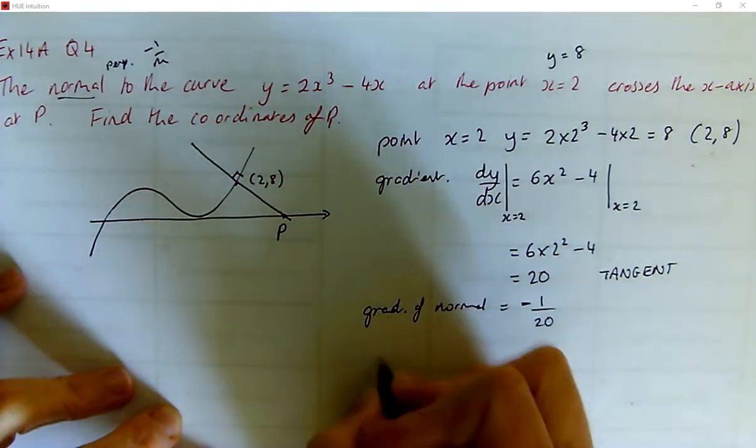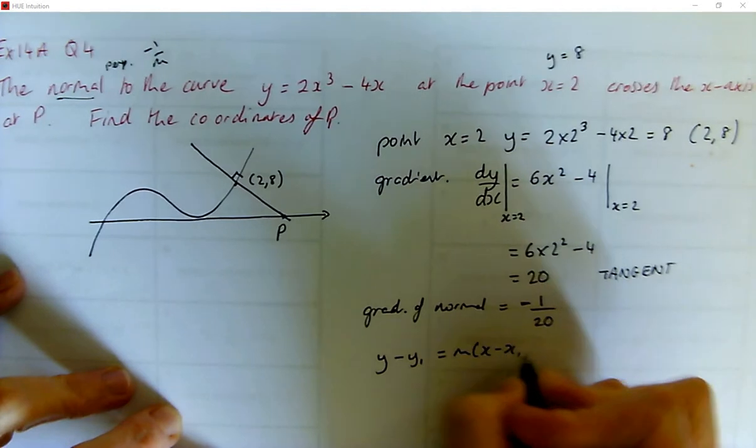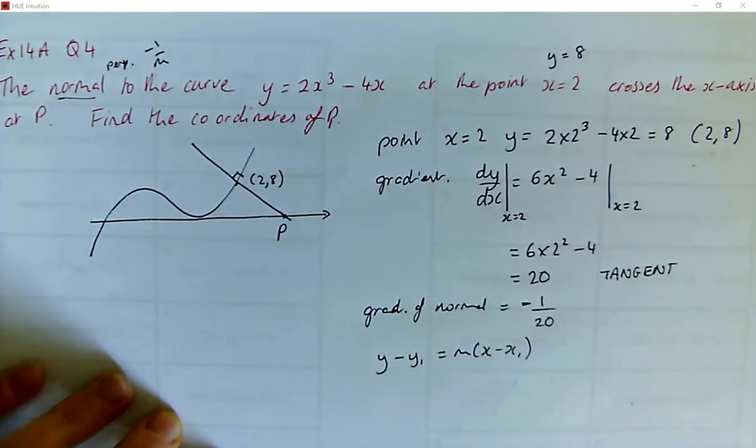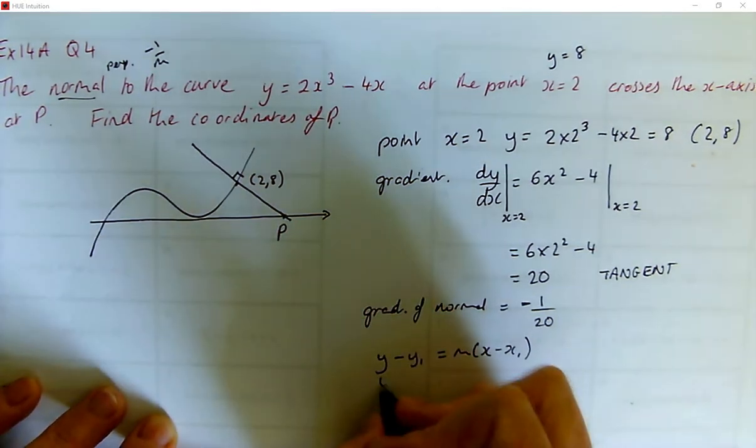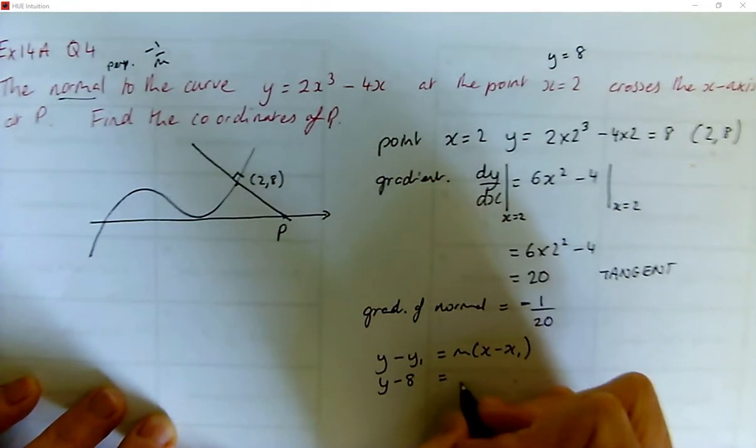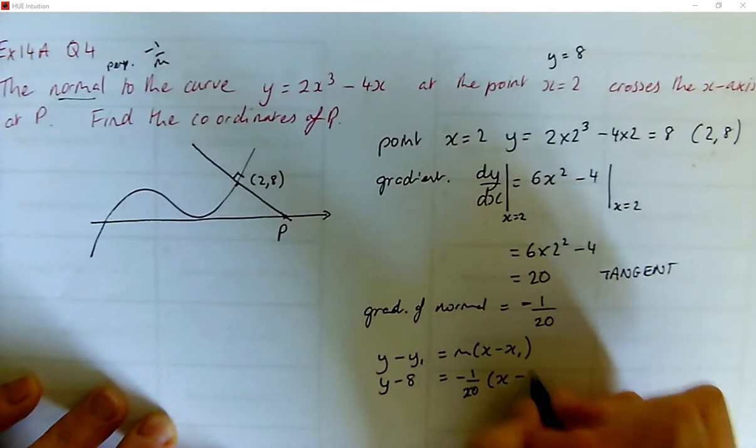So now we use y minus y₁ equals m(x minus x₁) to get our equation of our straight line, equation of our normal. So we've got y minus 8 is equal to minus 1/20(x minus 2).